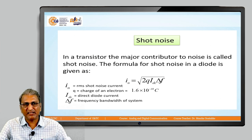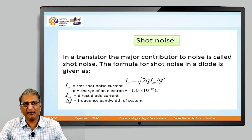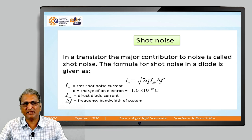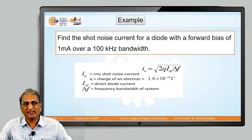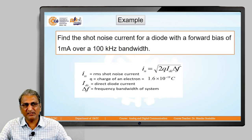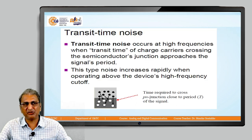In a transistor, the major contributor to noise is shot noise. It is given by the formula i_n = √(2q·i_dc·Δf), where i_n is the RMS shot noise current, q is the charge of an electron (1.6 × 10⁻¹⁹ coulombs), i_dc is the direct diode current, and Δf is the frequency bandwidth of the system. Small example: find the shot noise for a diode with a forward bias of 1 milliampere over a bandwidth of 100 kilohertz, using i_n = √(2q·i_dc·Δf). Substituting these values gives the shot noise current.